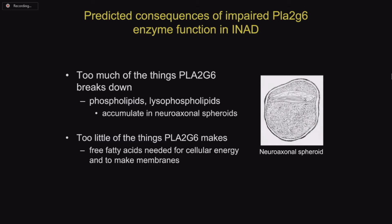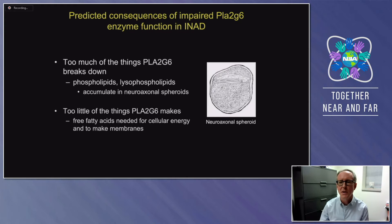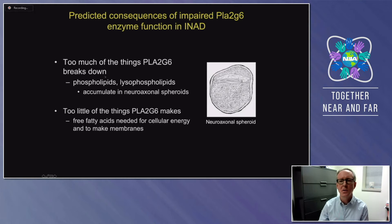Based on that, we can predict the consequences of this loss of enzyme function in INAD. One consequence is that too much of the things PLA2G6 breaks down will accumulate — specifically phospholipids and lysophospholipids. We believe that's consistent with what we see when we look at brain tissue from mouse models or from patients who had INAD and donated their brain for research, where we see lipids accumulating inside the axons and dendrites — the processes of neurons in the brain and peripheral nervous system.